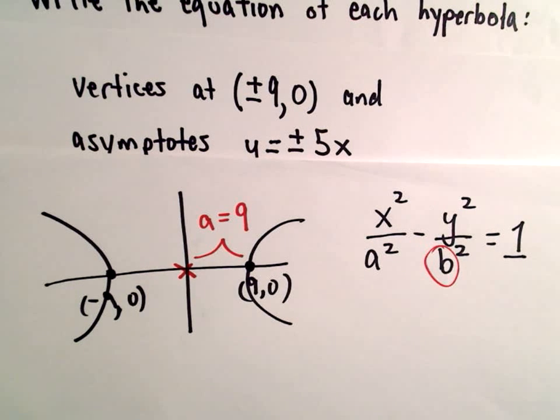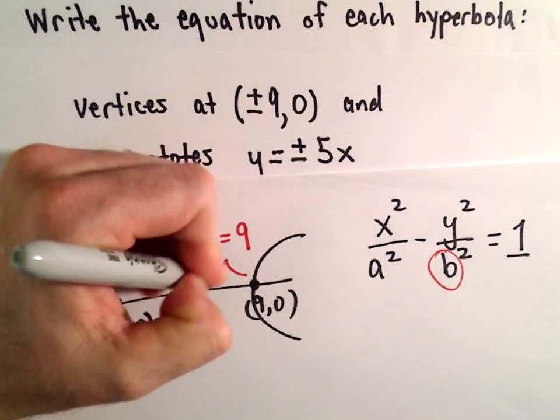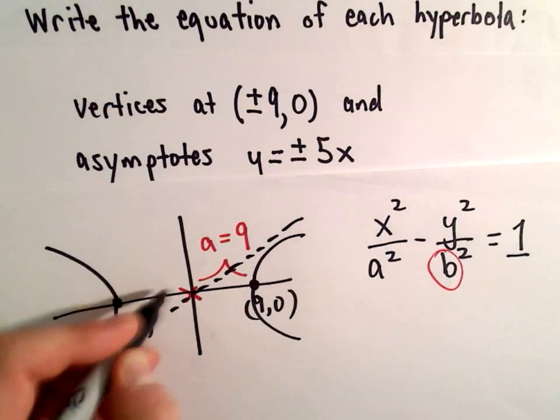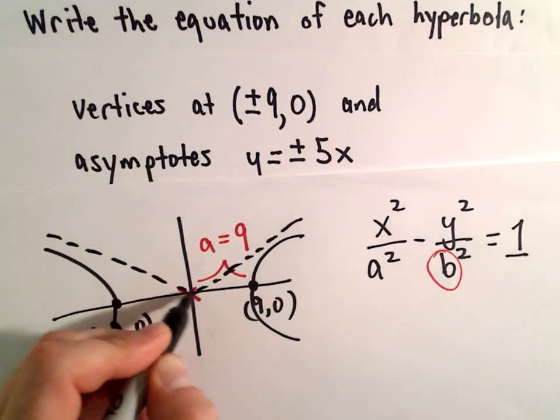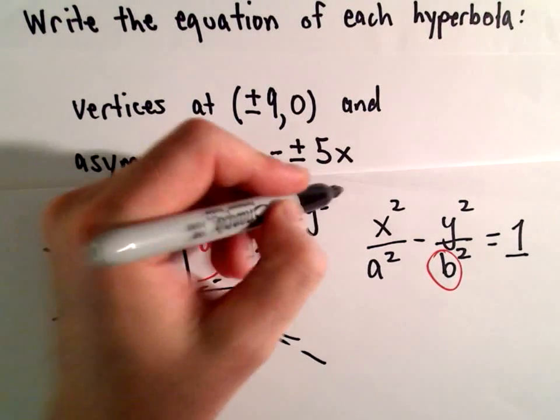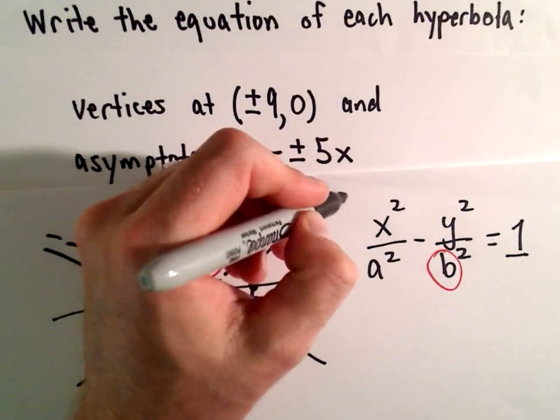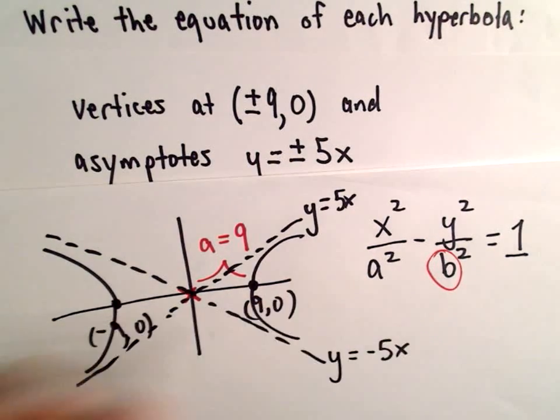Okay, well, we haven't used our asymptotes yet. Okay, so we have these asymptotes. Okay, and again, we know the equations, for example, this would be y equals positive 5x, and this would be the line y equals negative 5x.